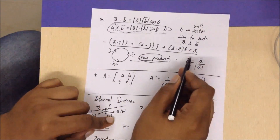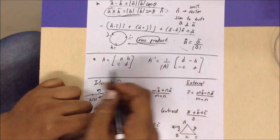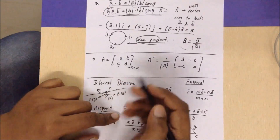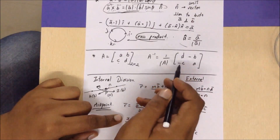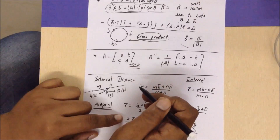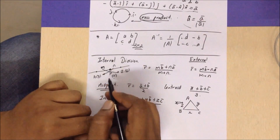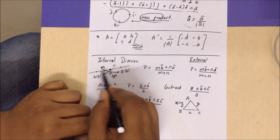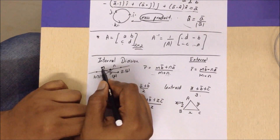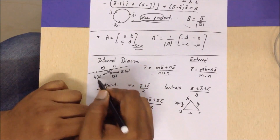To find a unit vector, divide the vector by its magnitude. For a 2×2 matrix, the inverse equals (1/det(A)) times the matrix with diagonal elements swapped and off-diagonal elements multiplied by -1. This is only applicable for 2×2 matrices. For a vector r dividing the line joining a and b internally in ratio m:n, the formula is r = (m·b + n·a)/(m+n).